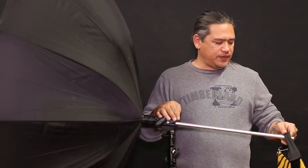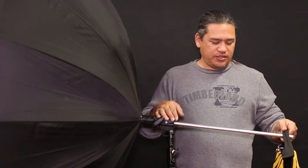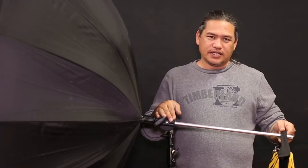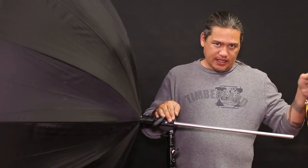Again, the sandbag will go on here if you're using like a 600 because of the weight distribution difference. But if you're not using the 600 and you're using the 360 or a speed light, you're not going to need this.